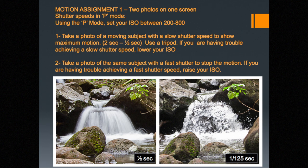Let's do our Motion Study Assignment 1. We're going to have two photos on one screen and vary the shutter speeds using P mode. We're going to take a photo of a moving subject with a slow shutter speed — between two seconds and a half a second — and we have to use a tripod. If you're having trouble achieving a slow shutter speed because there's a lot of light, you may have to lower your ISO setting. Then take another photo of the exact same subject with a faster shutter speed to stop the motion. If you're having trouble with a faster shutter speed due to light levels, you can raise your ISO.